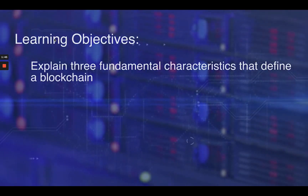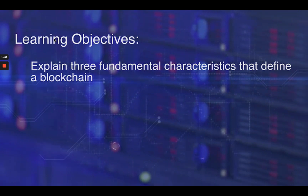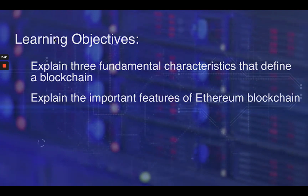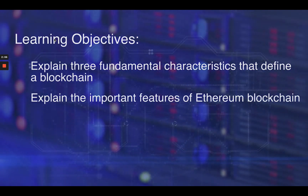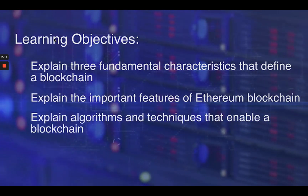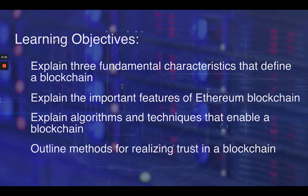This course is a first step in addressing this need. At the end of this course, you will be able to explain the three fundamental characteristics that define the blockchain using Bitcoin blockchain. By the end of the first module, we move beyond Bitcoin into introducing the next generation blockchains with Ethereum, discuss the important features of Ethereum blockchain, and explain the algorithms and techniques that enable the blockchain, including public key cryptography and hashing. Finally, you will be able to outline methods for realizing trust in a blockchain.